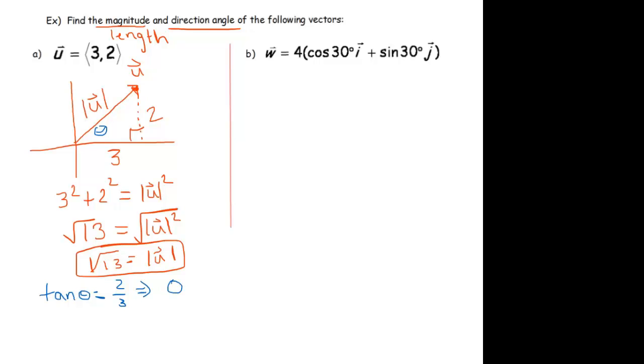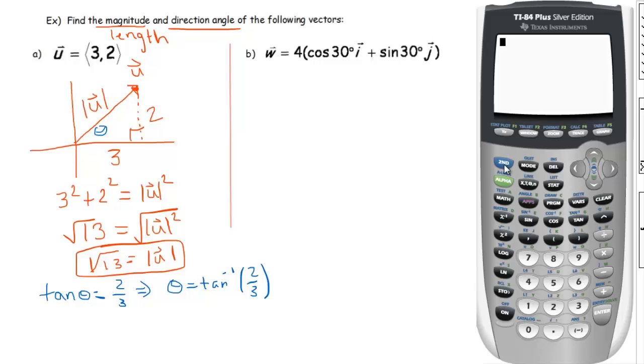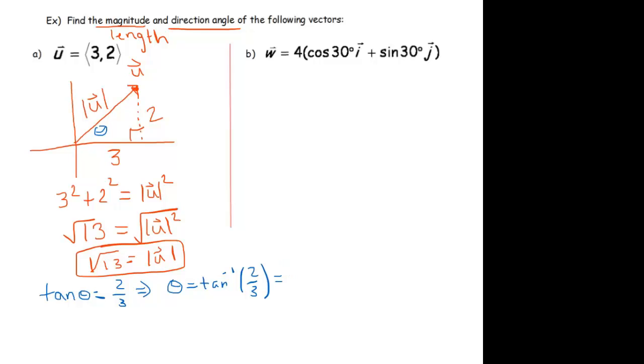So, that means that theta equals tan inverse of 2 over 3, which equals, take out the calculator, tan inverse of 2 divided by 3 is 33.69 degrees. What just happened there? 33.69 degrees.